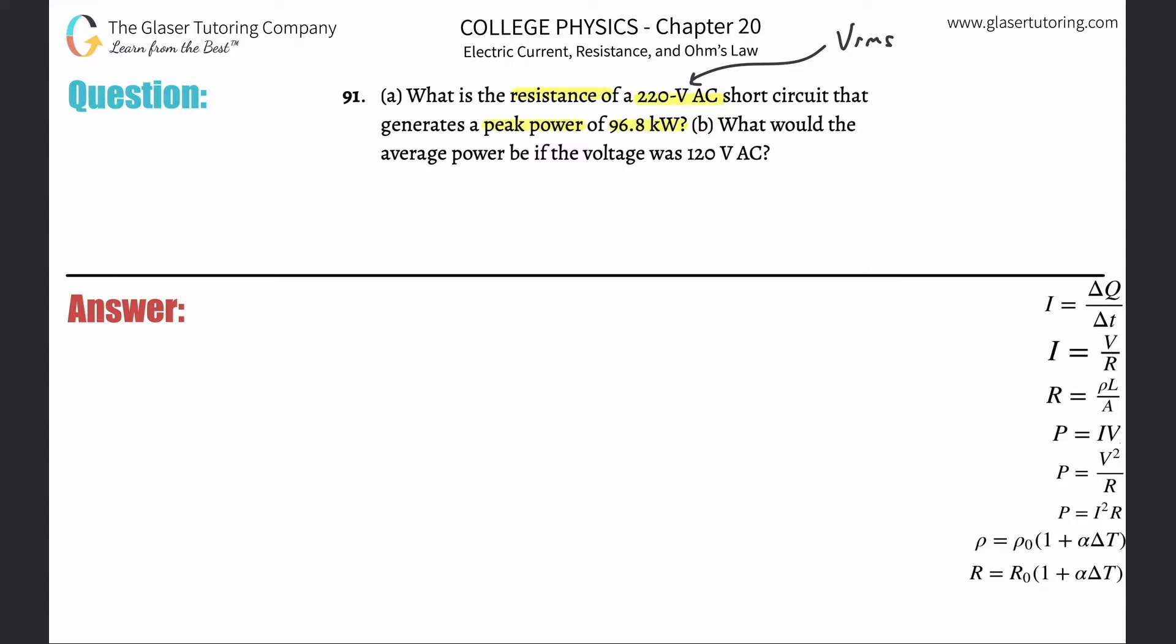What we now need to realize is when I want to find the resistance and they give me root mean square voltage, I have to relate that to power. Now, it's not related to peak power, it's related to average power. This formula that we have, P = V²/R—if they start talking about peak stuff, we've got to be very careful with what we label these variables. This is technically average power, and this is technically root mean square voltage.